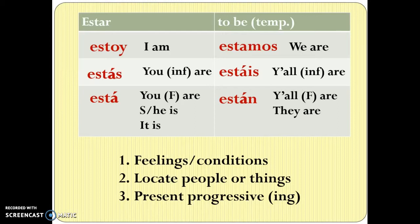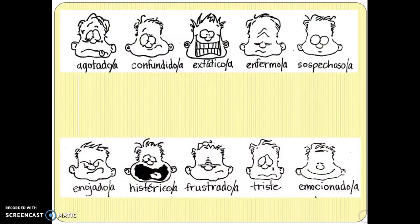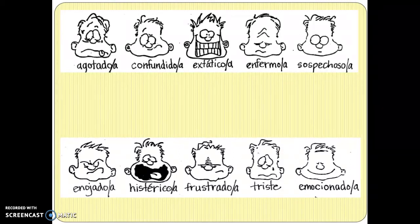Our first unit is going to be on feelings and conditions. Turn the page to page 70, and you'll see there's a variety of facial expressions trying to indicate what these Spanish words mean. Most of them are pretty good. The first thing I want you to notice about all of the feelings or conditions on this page is that most of them end in O or A. That should indicate to you, just like colors that we studied, that these are adjectives.